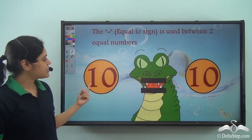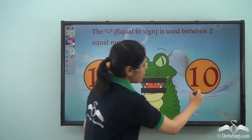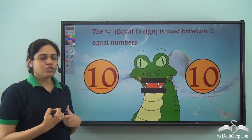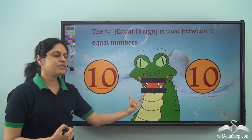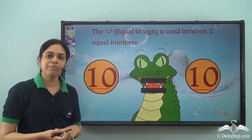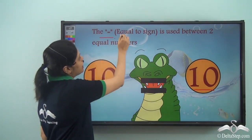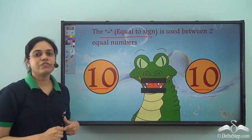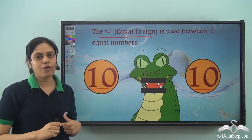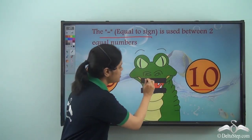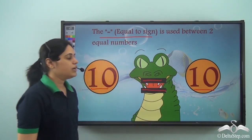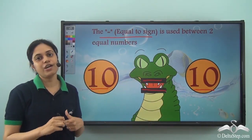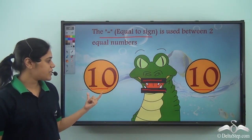In this case we have ten and ten on both sides, so the two numbers are the same. So we use the equal to sign. It is used between two numbers which are the same or equal. This is the equal to sign, used between numbers which are equal.